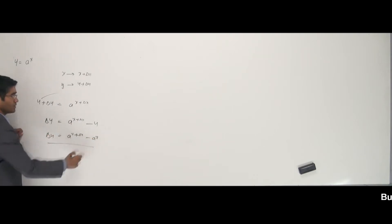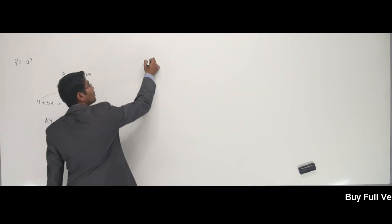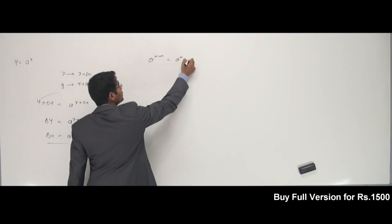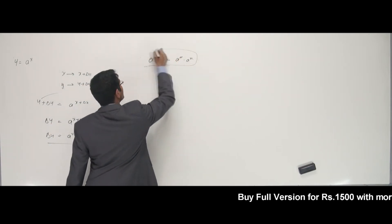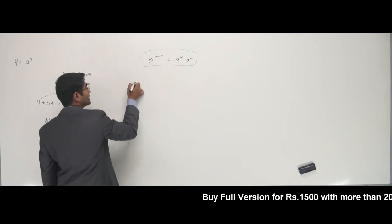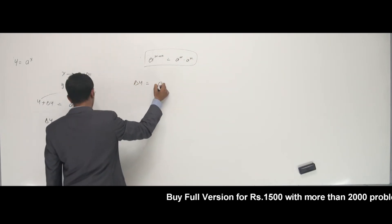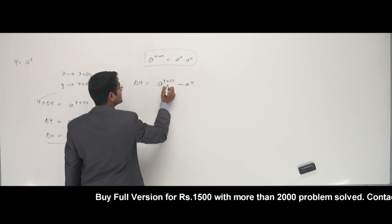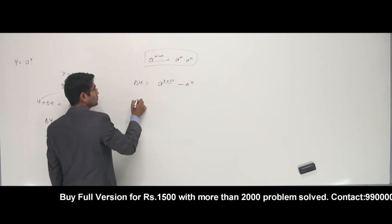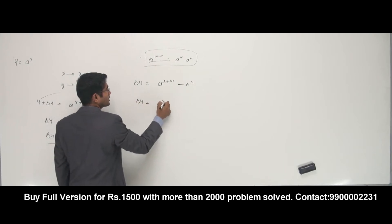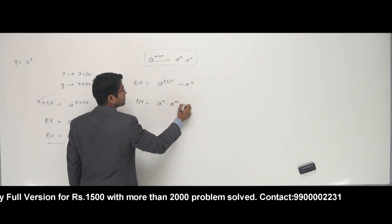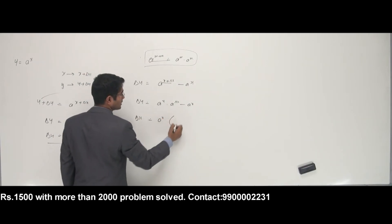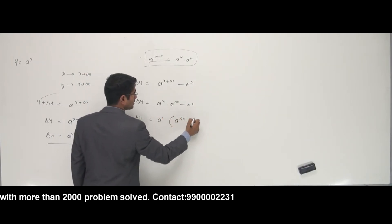And I know that y is nothing but a to the power x. Now I use the law that a to the power m plus n can be written as a to the power m into a to the power n. I use this on the expression and get delta y is equal to a to the power x into a to the power delta x, minus a to the power x. So a to the power x is common: delta y equals a to the power x into (a to the power delta x minus 1).